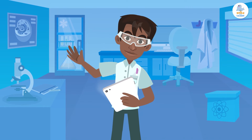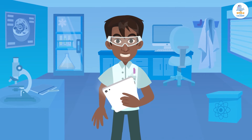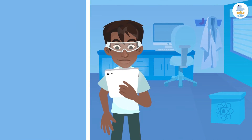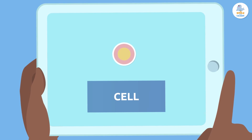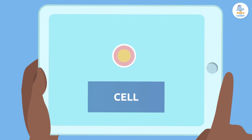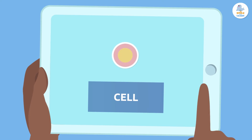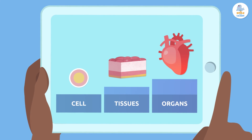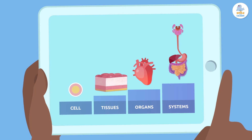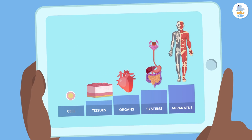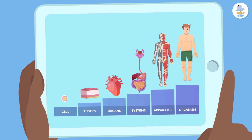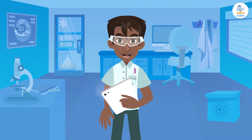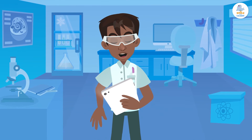Today we're going to take a super interesting journey inside living beings. We'll start with the cell, which is the smallest basic unit that can live on its own, and bit by bit we'll go through tissues, organs, systems, apparatus, and finally the organism. The human body is an example of how living beings are organized.